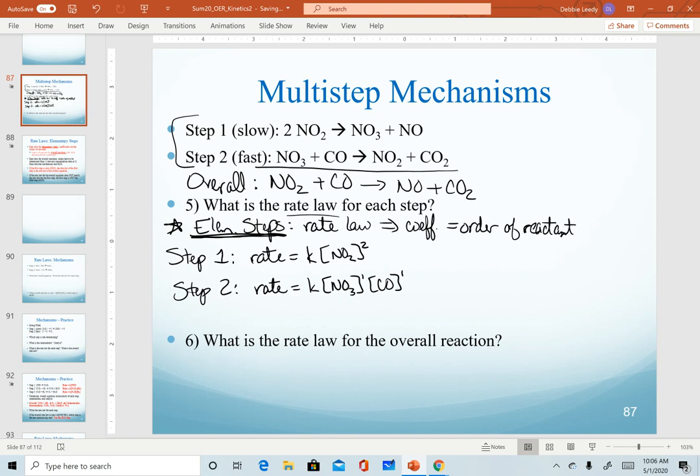So now the key is to put all of this information together to identify the rate law for the overall reaction. The other key piece we need to recognize is our rate determining step. So again, a rate determining step is the slow step, and it's the one that will determine the rate of the overall reaction.